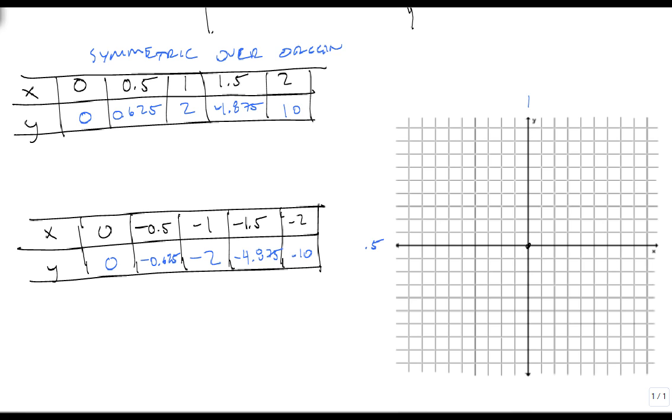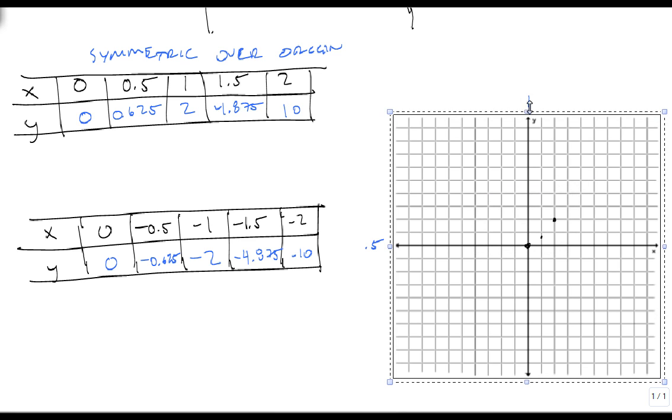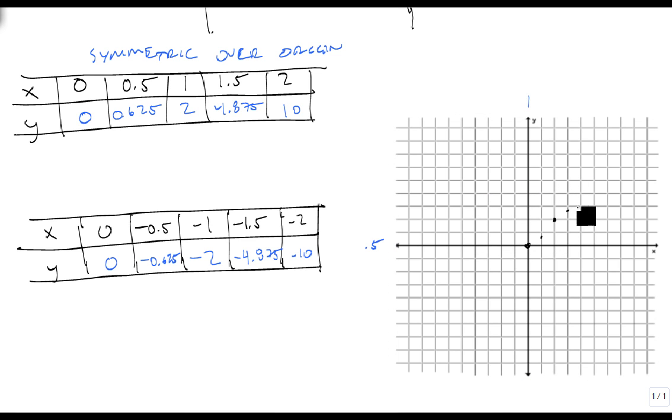So I have 0, 0, then 0.5, 0.625, then 1, 2, then 1.5, just a little bit less than 5, and 2, 10. And so my graph looks kind of like this.